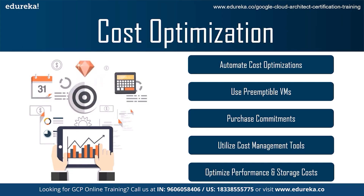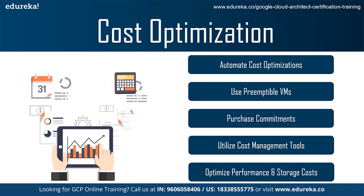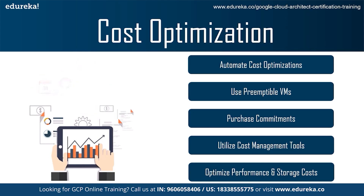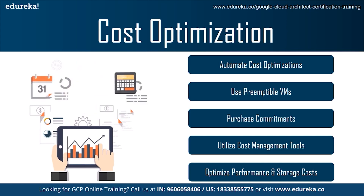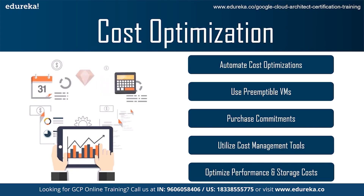The second best practice under cost optimization is using preemptible virtual machines. As with most trade-offs, the biggest reason to use a preemptible virtual machine is cost. Preemptible virtual machines can save up to 80% compared to a normal on-demand virtual machine.